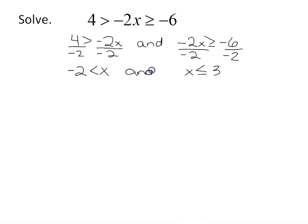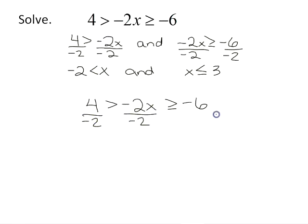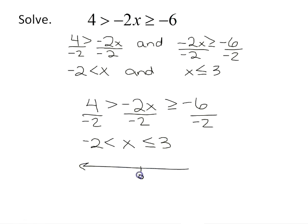We can also do it in one step, just working to get x by itself in the middle. Dividing all parts by negative 2 and reversing both inequality symbols gives: negative 2 is less than x is less than or equal to positive 3. On the number line, with 0, negative 2, and 3 marked, my solutions go from negative 2 all the way up to and including positive 3.